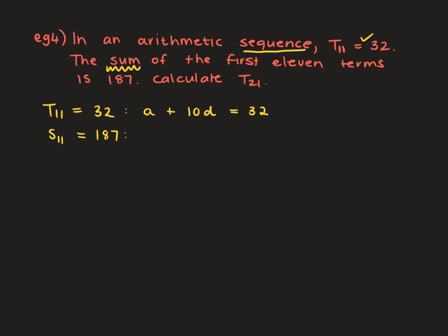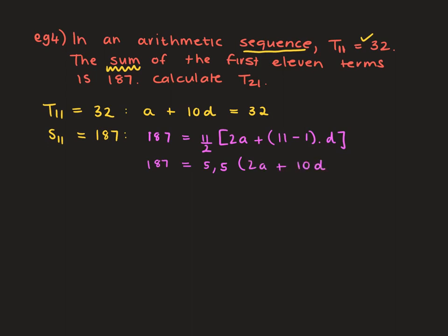When working out the sum of an arithmetic pattern, we use the formula: Sn equals n over 2 times (2A plus (n minus 1) times D). So S11 is 187, equal to 11 over 2 times (2A plus 10D). Simplifying: 187 equals 5.5 times (2A plus 10D). Dividing both sides by 5.5: 34 equals 2A plus 10D.